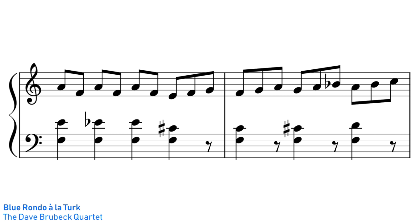Blue Rondo a la Turk by the Dave Brubeck Quartet is a fantastic example of 9/8 time. Brubeck switches routinely between grouping the 9 beats of the bar like this in three groups of 2 and one group of 3, and then to a more regular set of three groups of three.